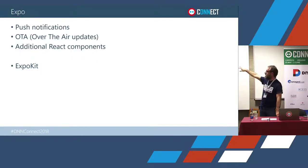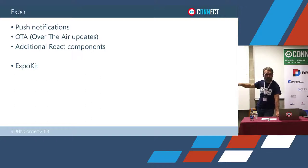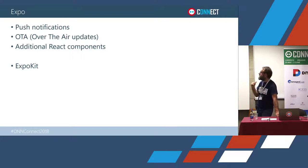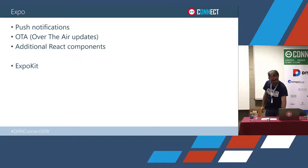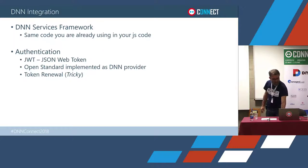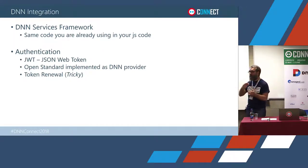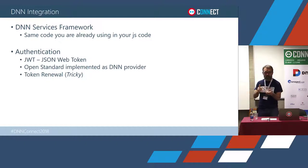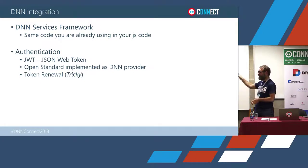A couple more things Expo provides automatically: push notifications — they give you all the infrastructure to push notifications from apps to your servers — and over-the-air updates. They also provide extra components via the Expo Kit. That's a very quick introduction of the tools you can use: React, React Native, and Expo. With that setup, in 30 minutes you are done and running, ready to build your new applications.